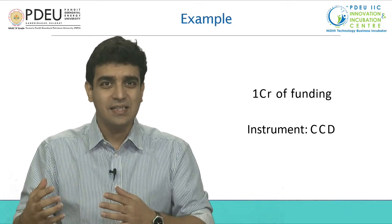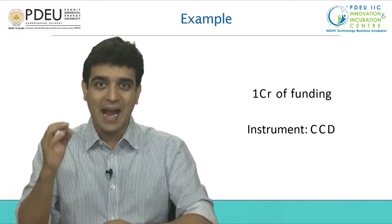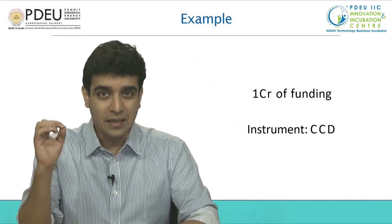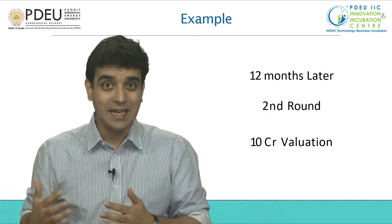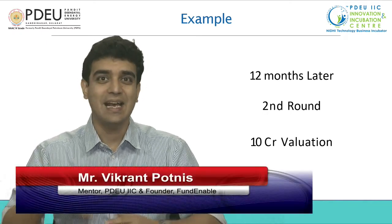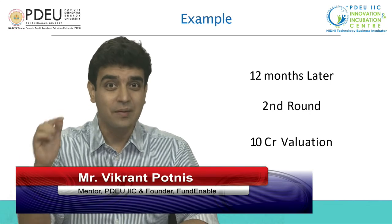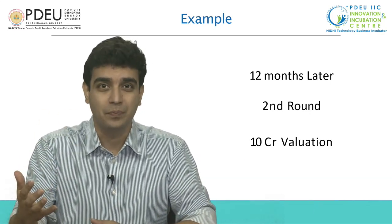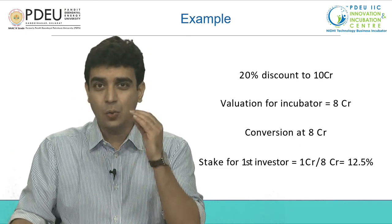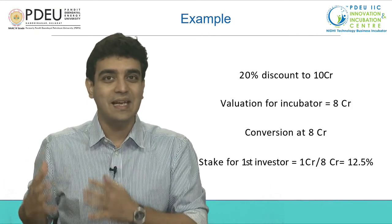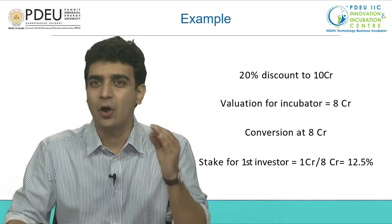Let us understand this with the help of an example. Let us say you raise 1 crore of funding in the form of CCD as your first round of funding. This 1 CR will reflect in your books as debt. 12 months later, your startup raises a 2nd round of investment at a valuation of 10 CR. At this stage, the CCD will get converted into equity. A 20% discount will be applied to the 10 CR valuation offered by your second investor, giving us a valuation of around 8 CR.